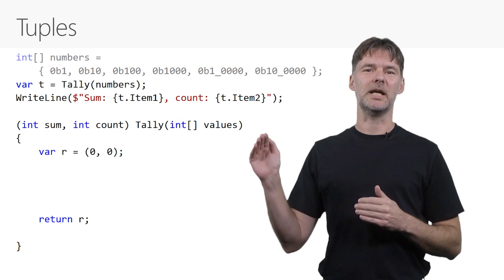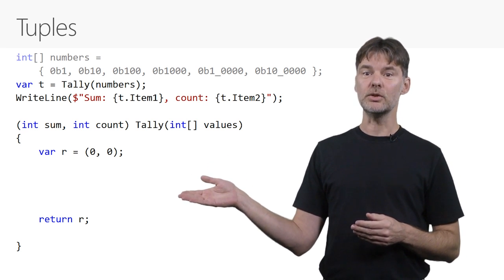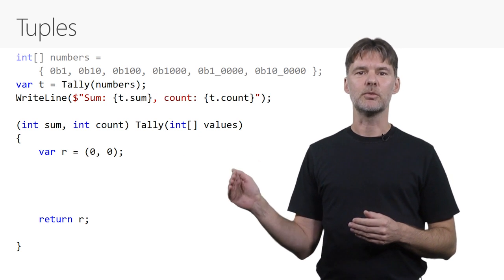How can the caller know which is the sum and which is the count? Let's give them better names. The tuple now declares names for its elements. The consumer can still use item1 and item2, but they can also use sum and count, the names we just declared.